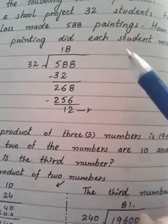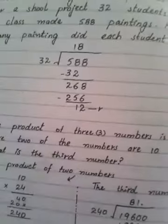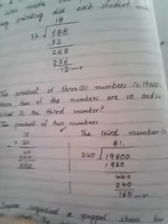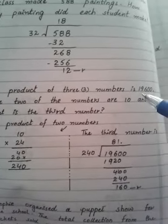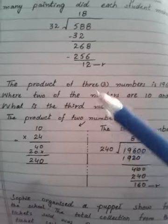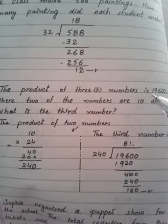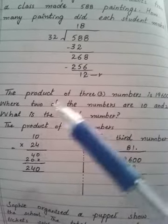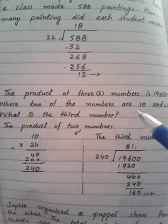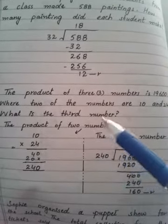Look here, the next part. The product of three numbers is nineteen thousand six hundred. Product means multiplication process - three numbers multiplied together give this answer. Where two of the numbers are ten and twenty four, what is the third number?